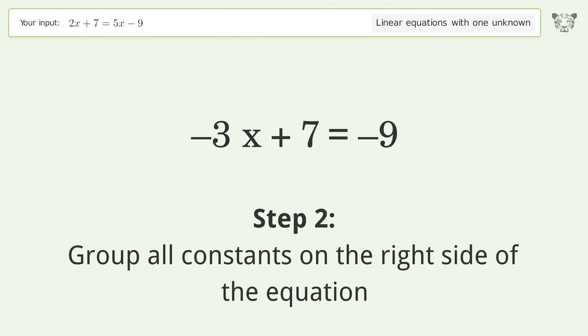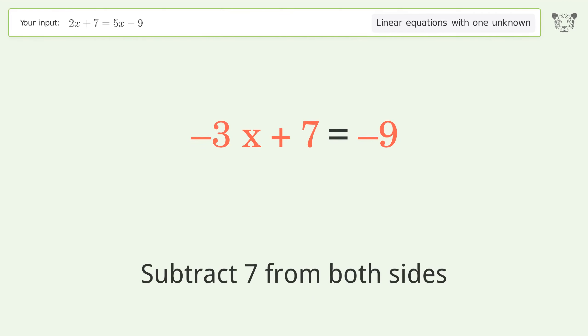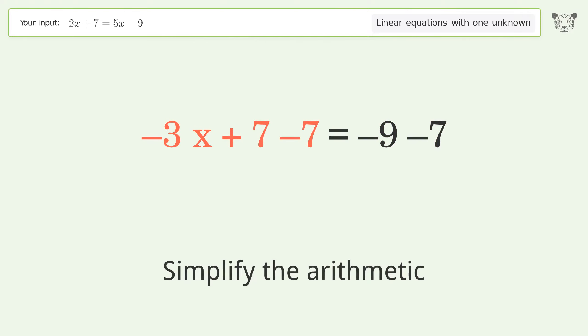Group all constants on the right side of the equation. Subtract 7 from both sides. Simplify the arithmetic.